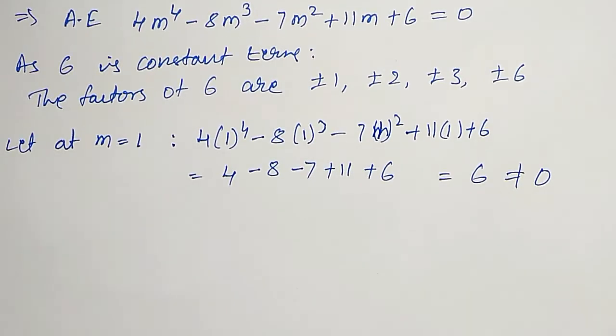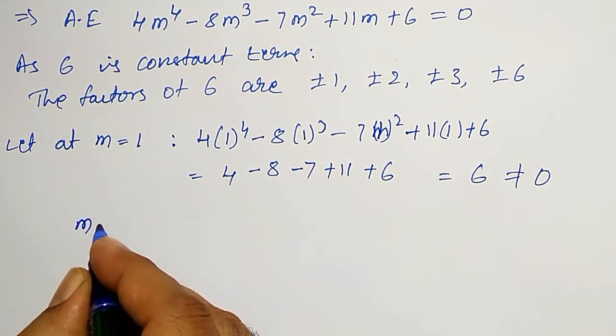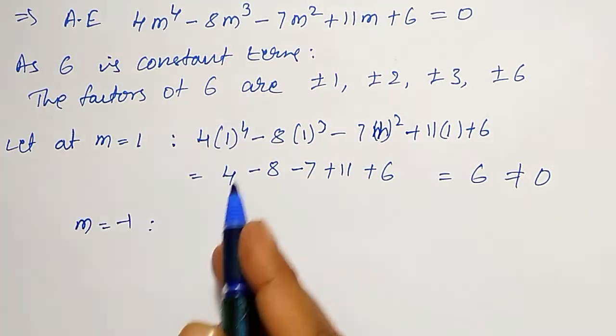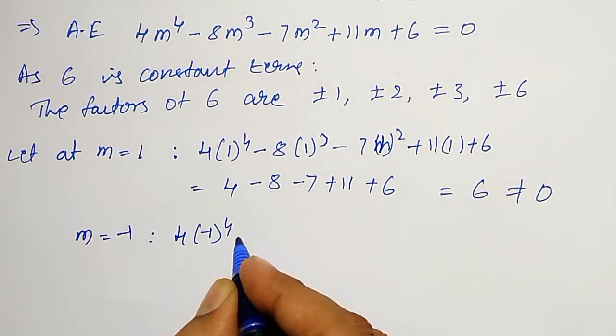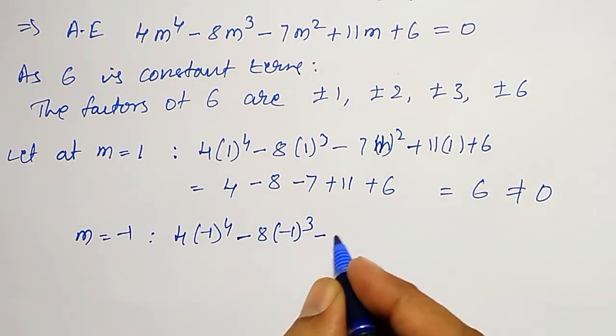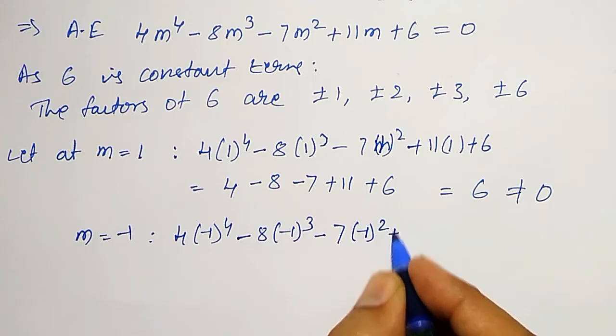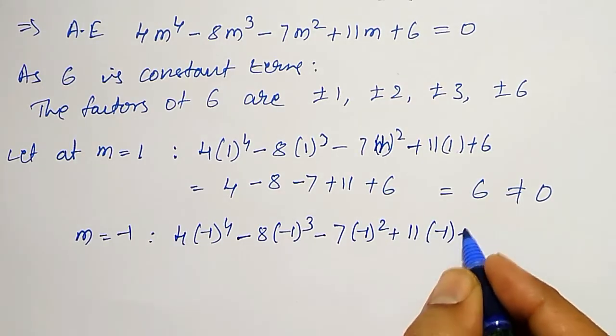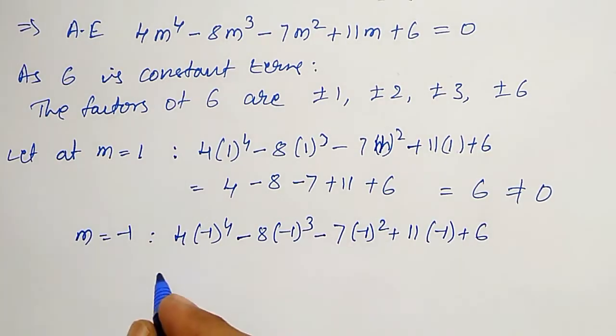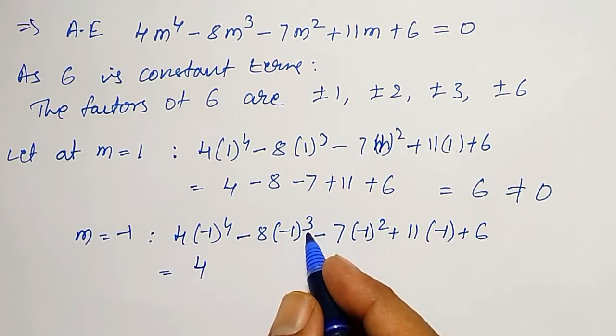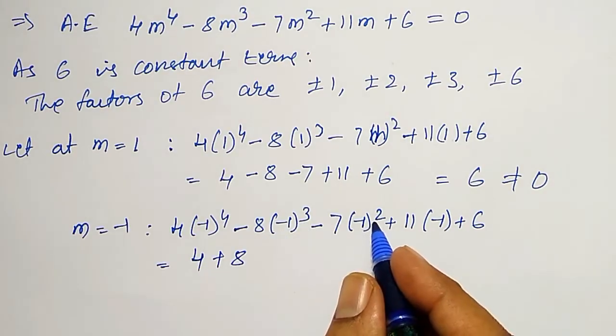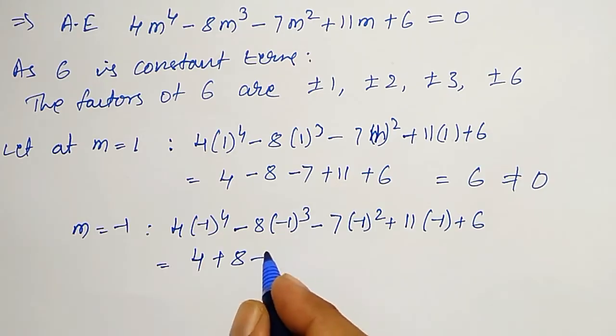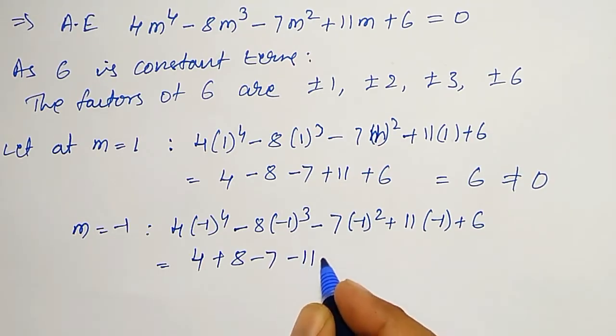To find another, let me check for M = -1 now. M = -1, let me check in the same equation: 4(-1)^4 - 8(-1)^3 - 7(-1)^2 + 11(-1) + 6. That is, (-1)^4 will become +4, (-1)^3 will become -1 therefore it is +8, (-1)^2 will become +1 therefore it is -7, -11, +6.